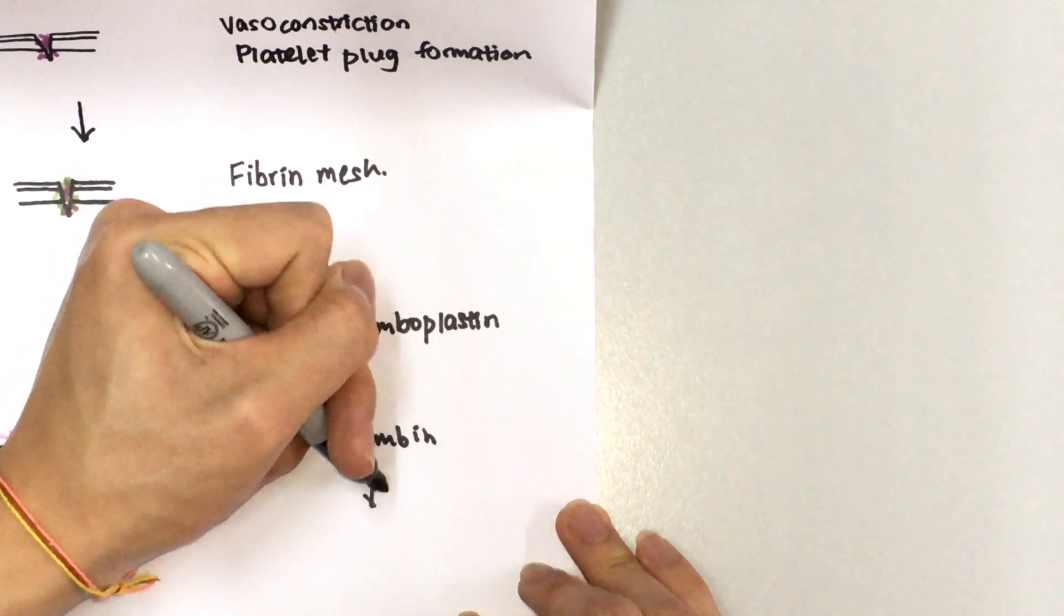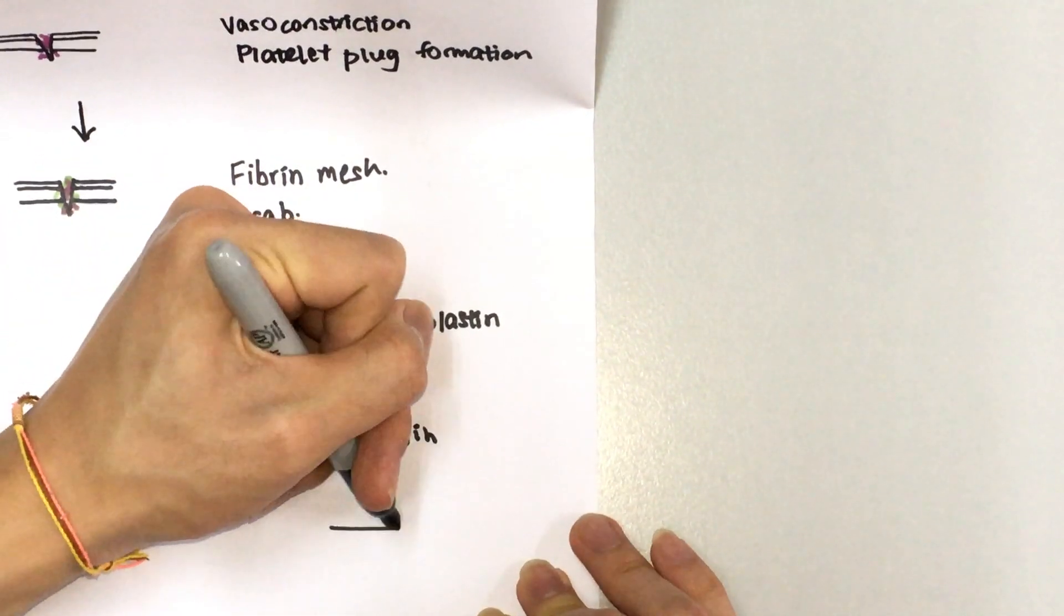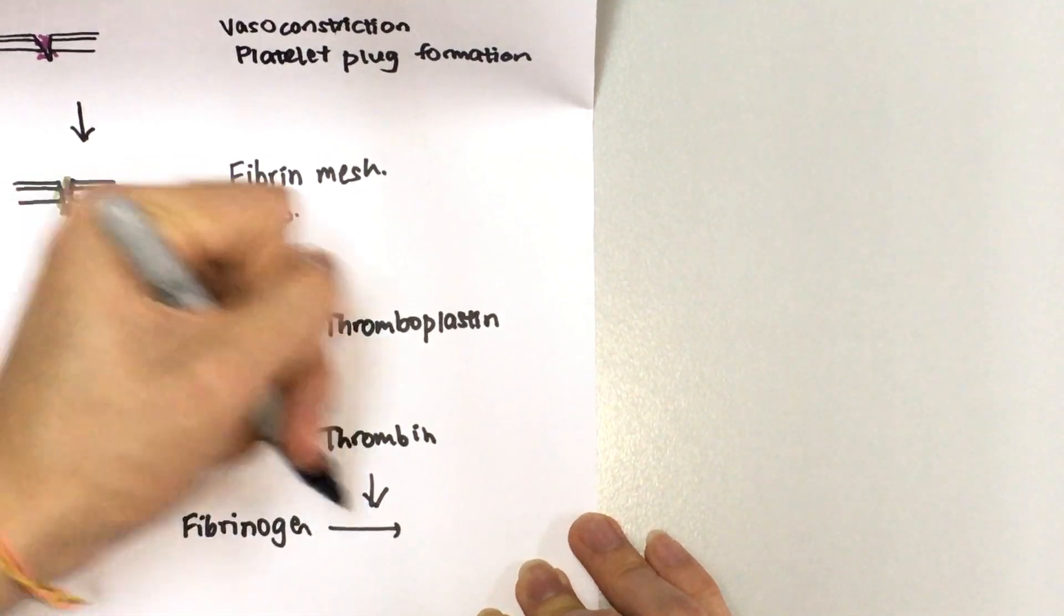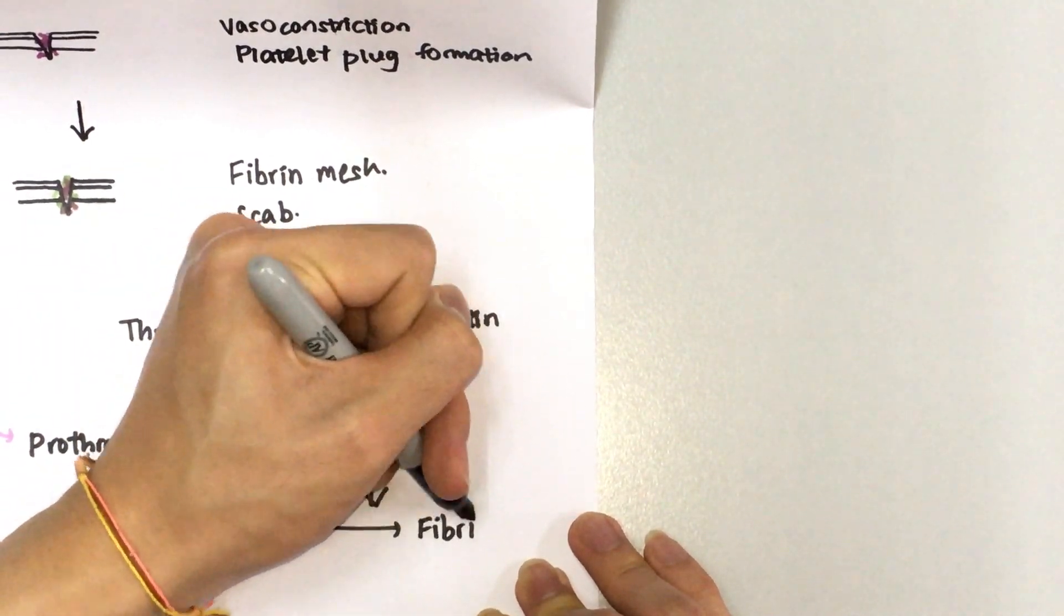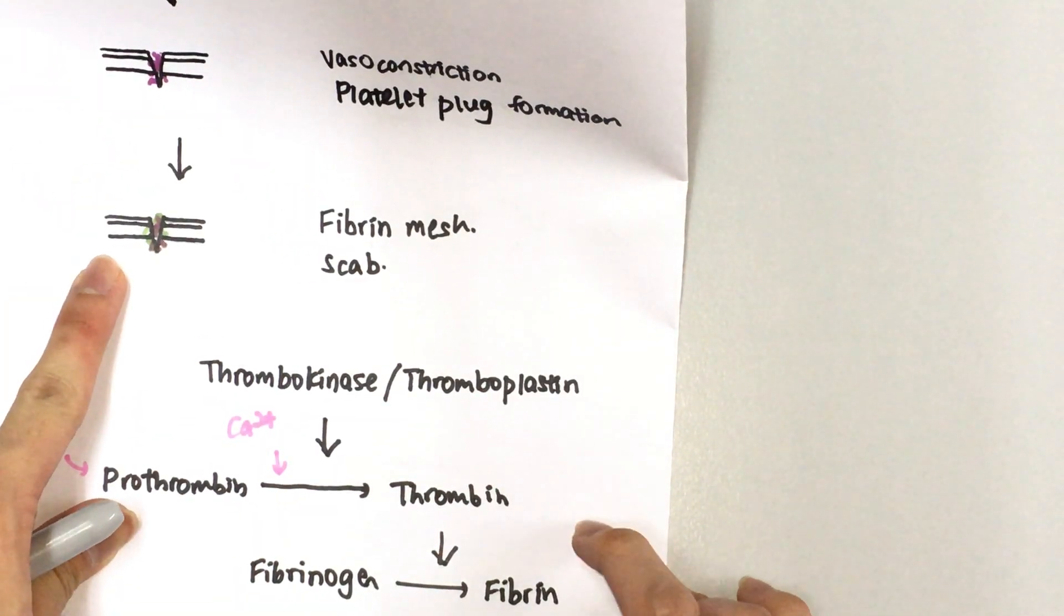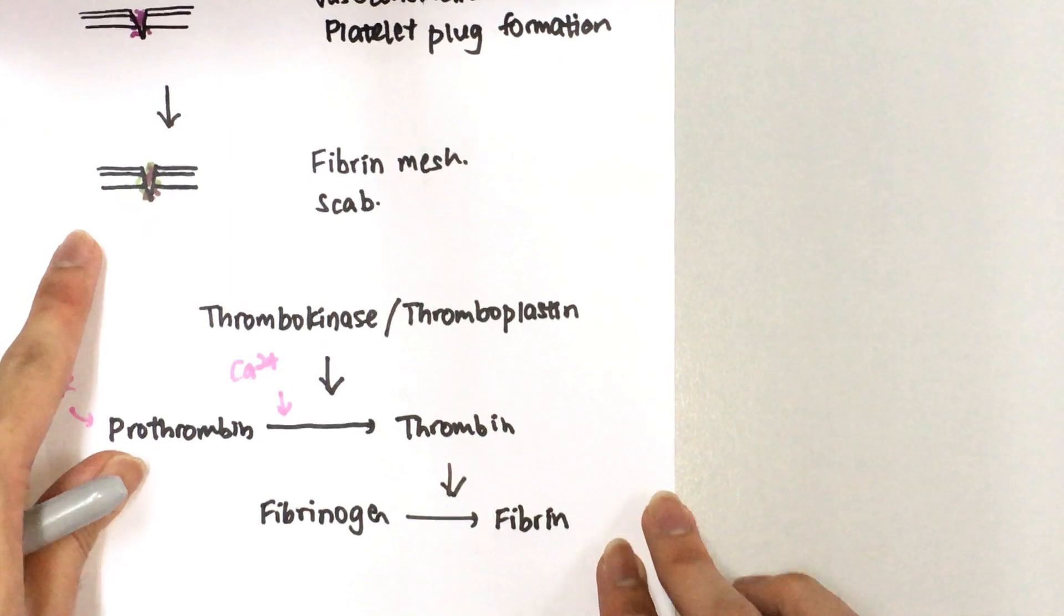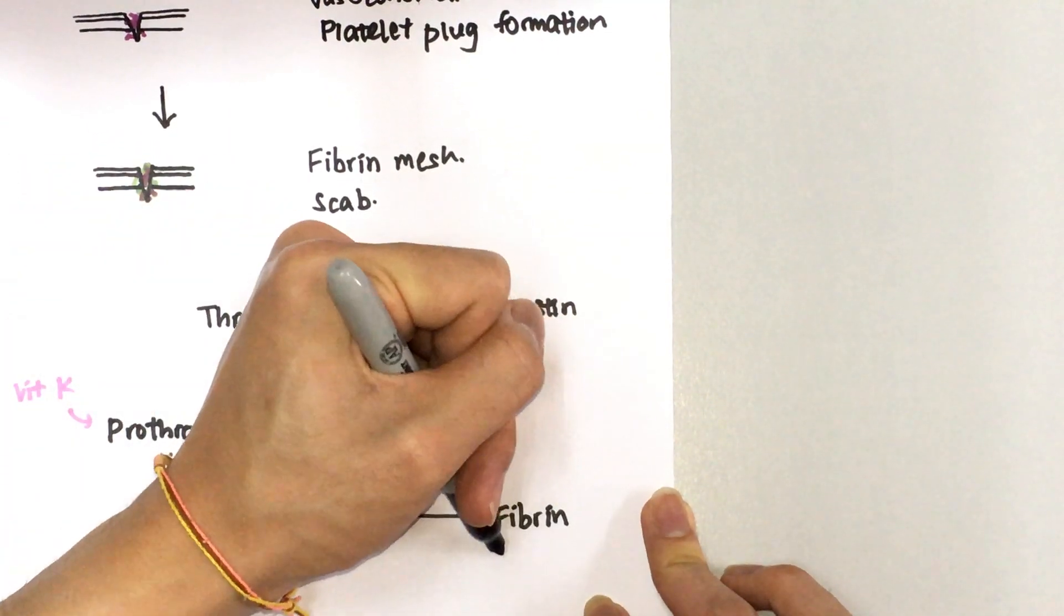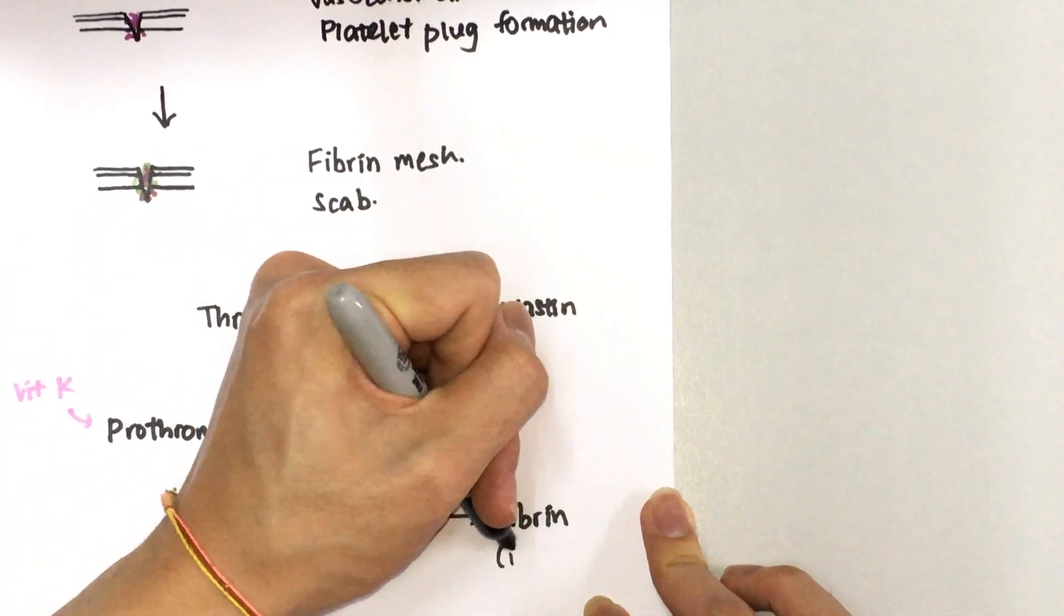thrombin is going to convert fibrinogen into fibrin, which would then form the mesh up here. So fibrinogen is soluble and fibrin, which is the product here, is insoluble.